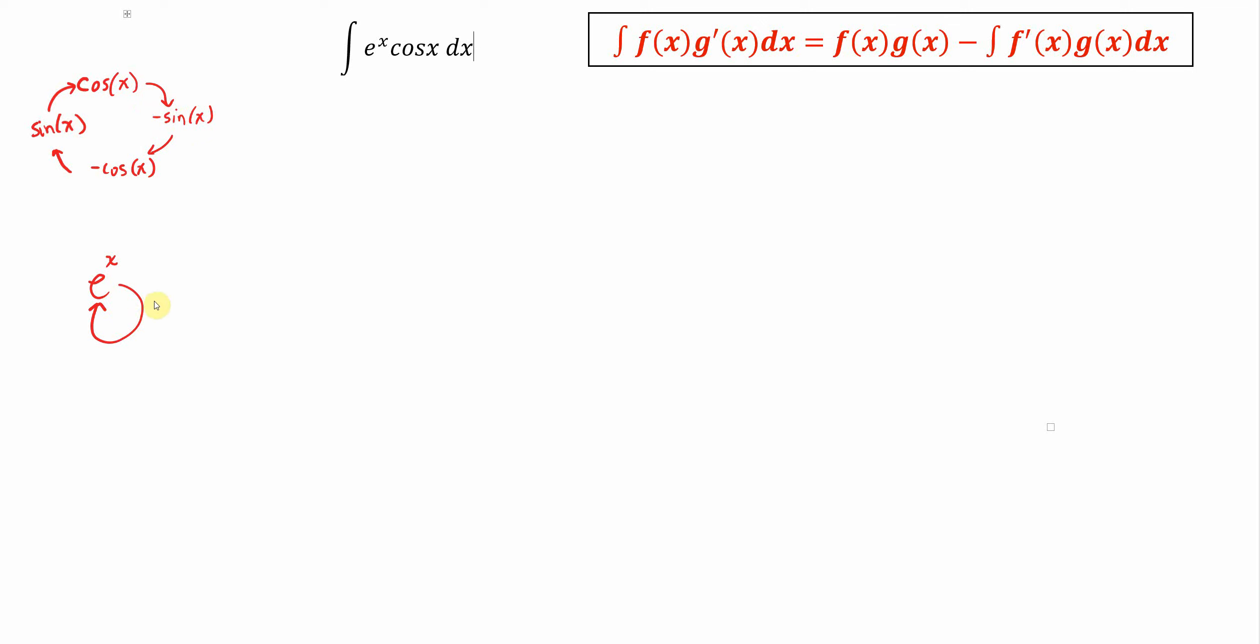That's helpful to point out because it helps us see that it doesn't really matter which you choose for g and which you choose for f, or f and g prime. You can end up going in kind of a loop anyways.